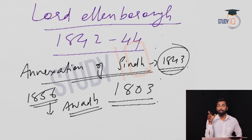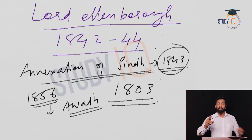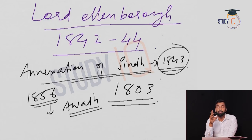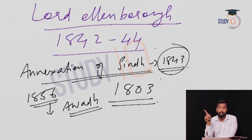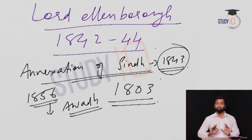In 1856, there was another important annexation — Awadh — for an entirely different reason: misgovernance. Awadh could not be annexed under the Doctrine of Lapse because it was a Muslim kingdom under Nawab Wajid Ali Shah, and the adoption law (Doctrine of Lapse) was not applicable to Muslim states. So the British found another reason — misgovernance — and annexed Awadh. This was one of the most important reasons for the 1857 revolt, which is why Begum Hazrat Mahal fought actively in it. Lord Ellenborough's key event: Annexation of Sindh.